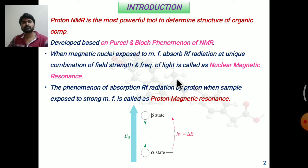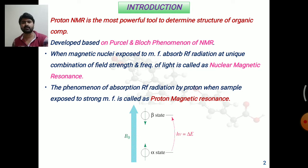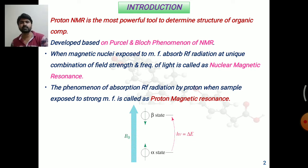We know that proton NMR is the most powerful tool to determine the structure of various organic compounds. This technique was developed based on the phenomenon of nuclear magnetic resonance, which was discovered by Purcell and Bloch in 1946 independently. According to this phenomenon, when a magnetic nucleus is exposed to an external magnetic field, it absorbs radio frequency radiation at a specific combination of field strength and frequency, which is called nuclear magnetic resonance.